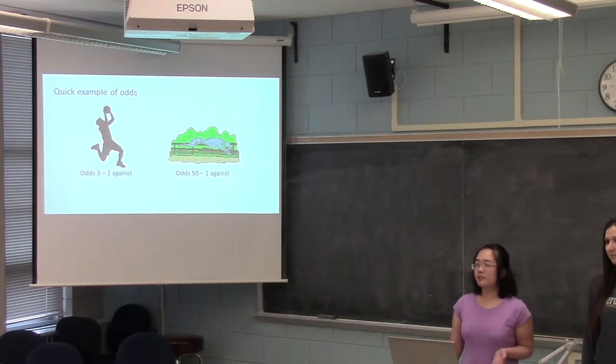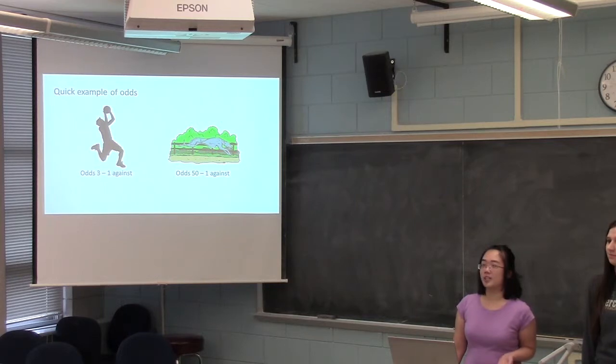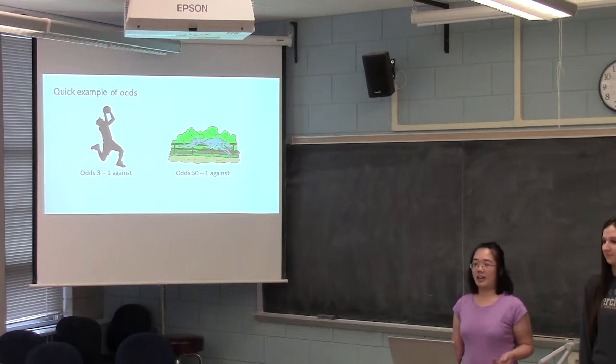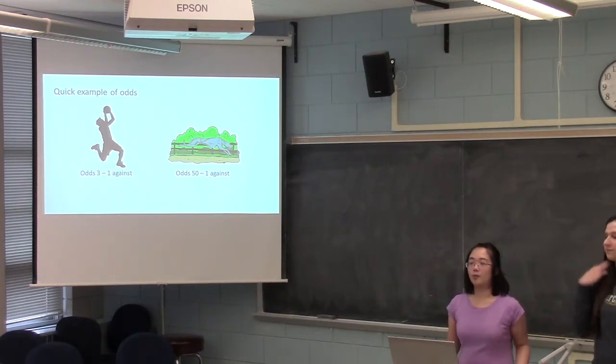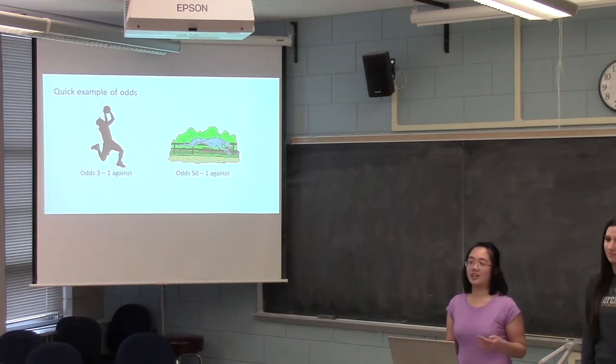So where you might have seen odds ratios before, you might have seen them in sports. When you say maybe a team has 3 to 1 odds against them, or a dog race, the particular dog you're looking at has odds of 50 to 1 against them. So what does that really mean and where are they getting these numbers?